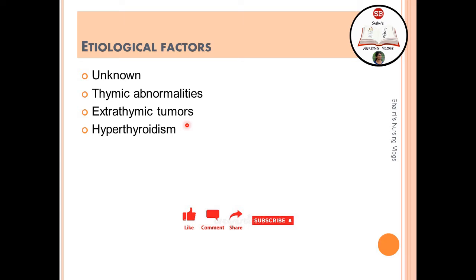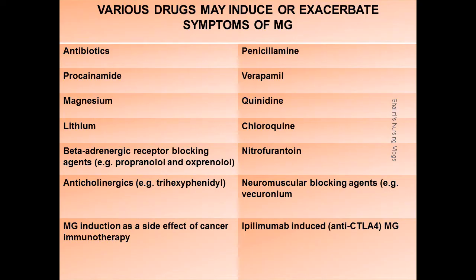Hypothyroidism is present in three to eight percent of cases. Various drugs may induce or exacerbate symptoms of myasthenia gravis, for example certain antibiotics, procainamide, magnesium, lithium, beta-adrenergic receptor blocking agents, anticholinergics, penicillamine, verapamil, quinidine, chloroquine, nitrofurantoin, vecuronium, and certain cancer immunotherapy drugs.